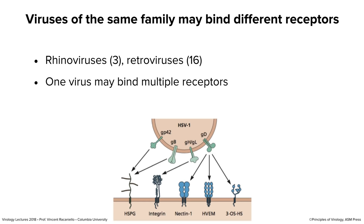Sometimes viruses within the same family may bind different receptors — for example, there are three different cell receptors for rhinoviruses and probably 16 or more receptors for retroviruses. Sometimes one virus binds multiple receptors. Herpes simplex virus type 1 has four glycoproteins in its envelope that engage a number of cell molecules. The key points to remember: receptors are cell proteins that have a function; sometimes one virus binds a single receptor; sometimes two viruses bind the same receptor; and sometimes there are multiple receptors for one virus.